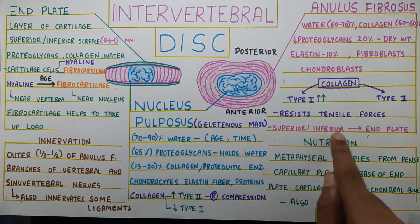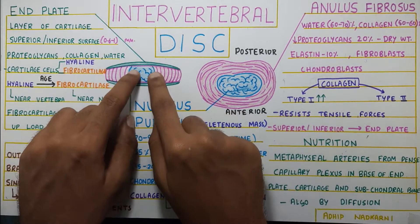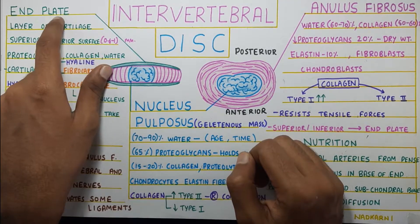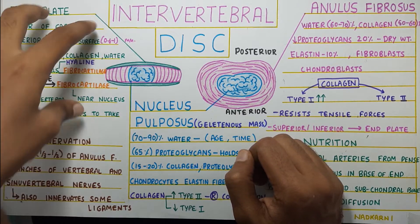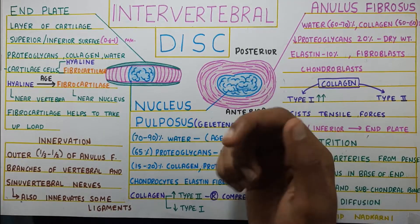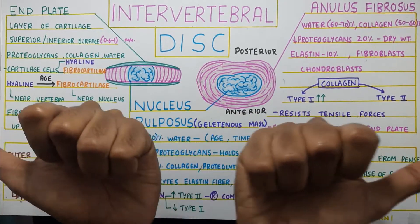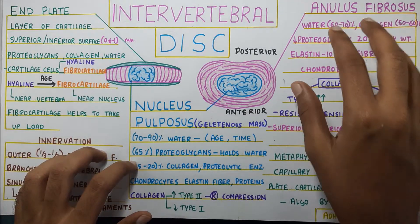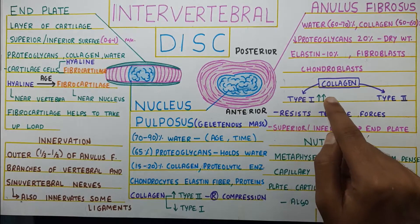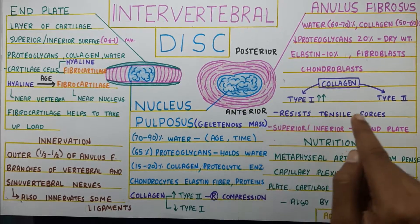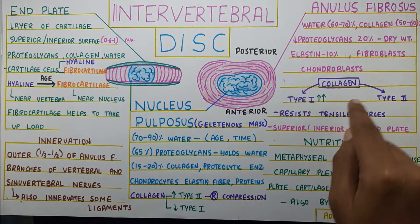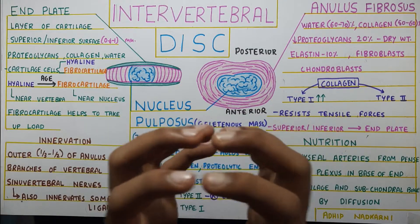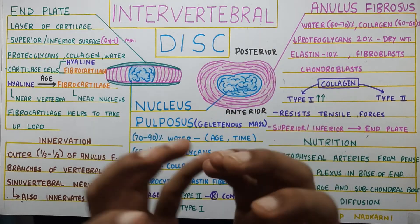The annulus fibrosus is covered superiorly and inferiorly by the end plate. Comparing the two: nucleus pulposus has more water and high proteoglycans with type 2 collagen, while annulus fibrosus has less water, low proteoglycans, and type 1 collagen that resists tensile forces. There is a balance of type 1 and type 2 collagen that together create equilibrium and allow the disc to absorb forces effectively.